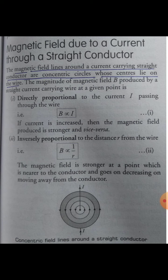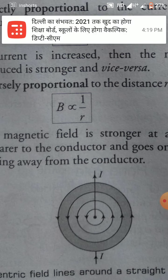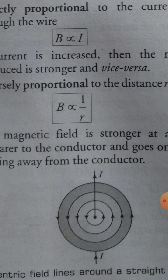The center of these concentric circles lies on the wire itself. You can see on the paper — the dark line represents the electric wire. When current flows through it, a magnetic field is formed, and those magnetic field lines are concentric circles whose center lies on the wire.